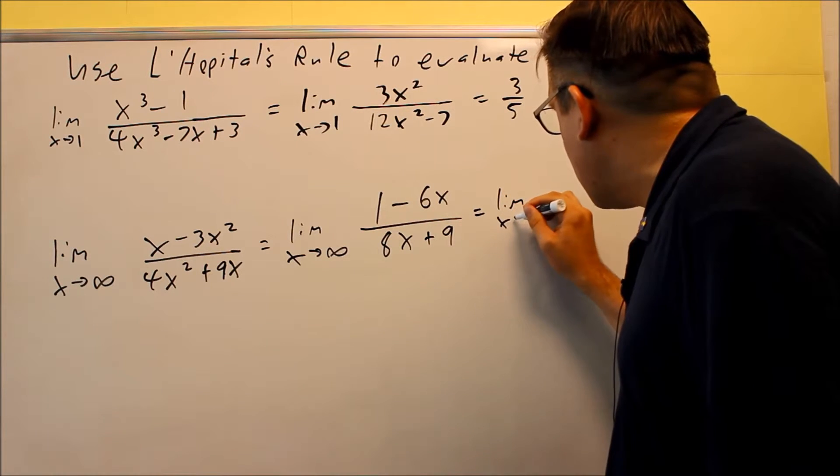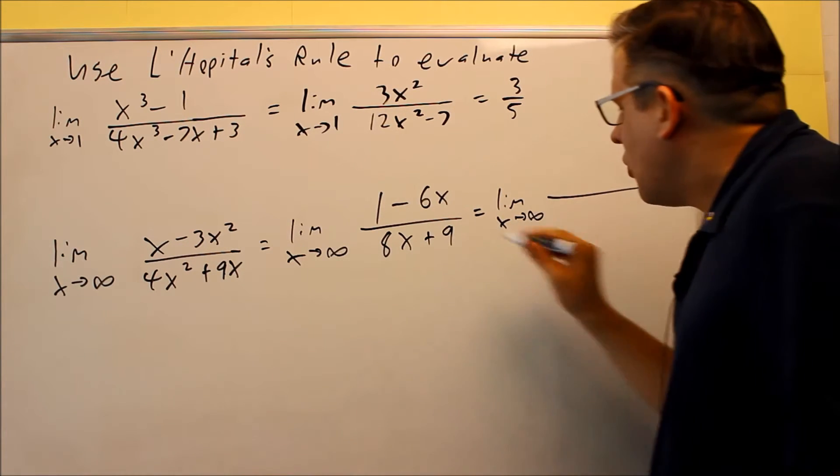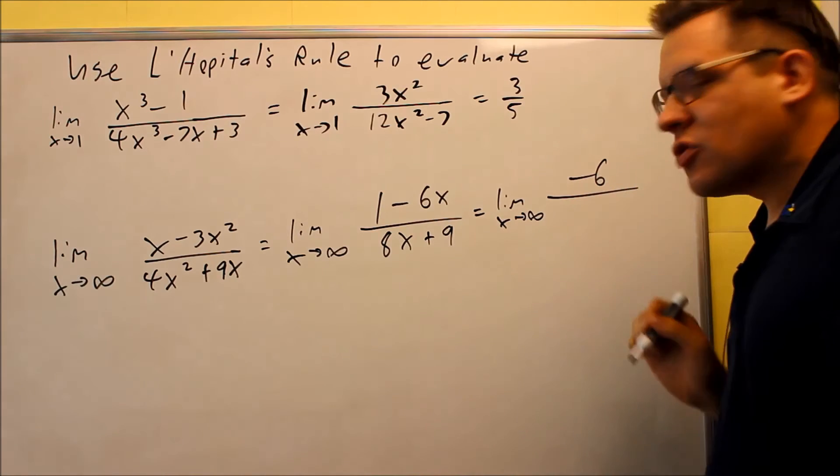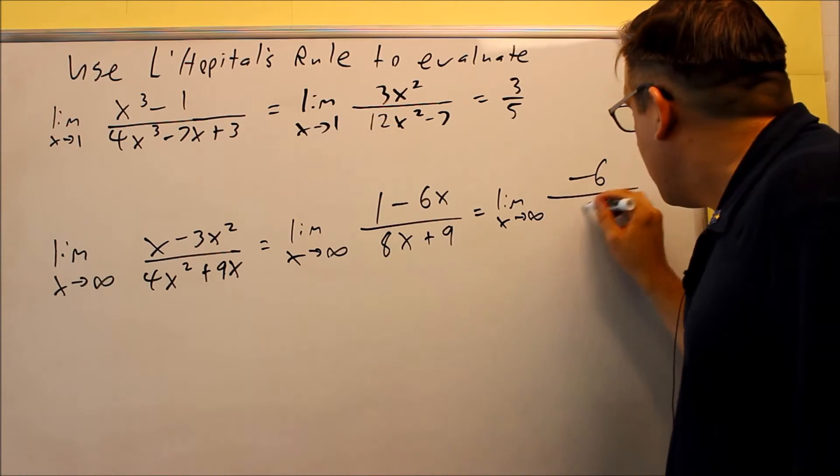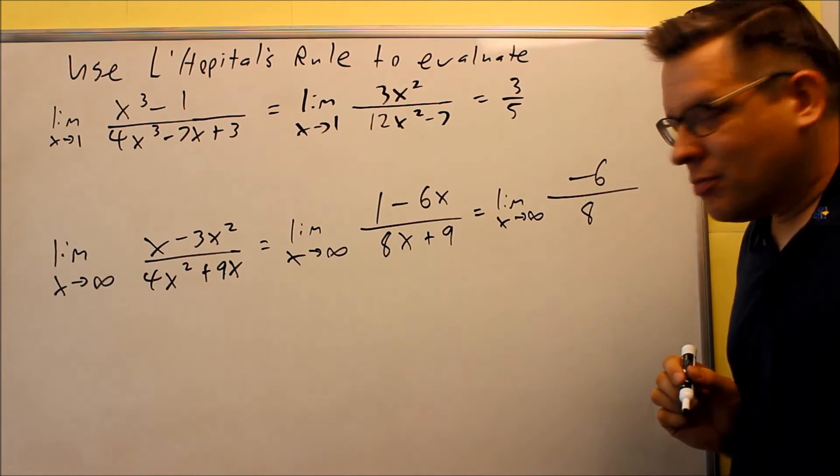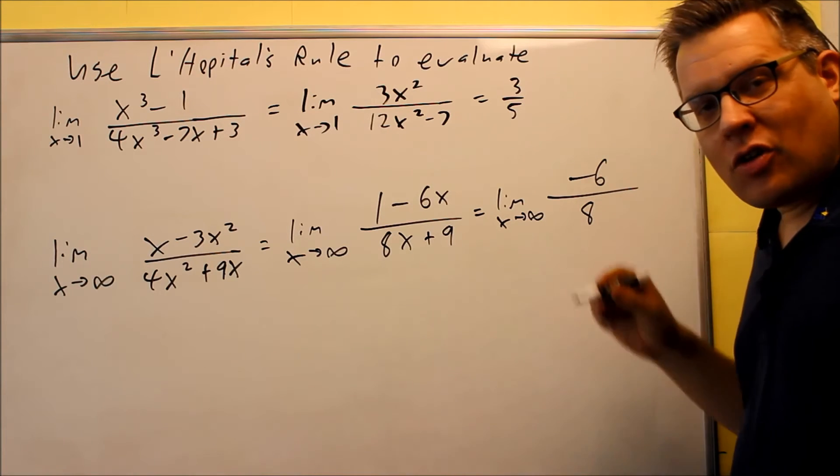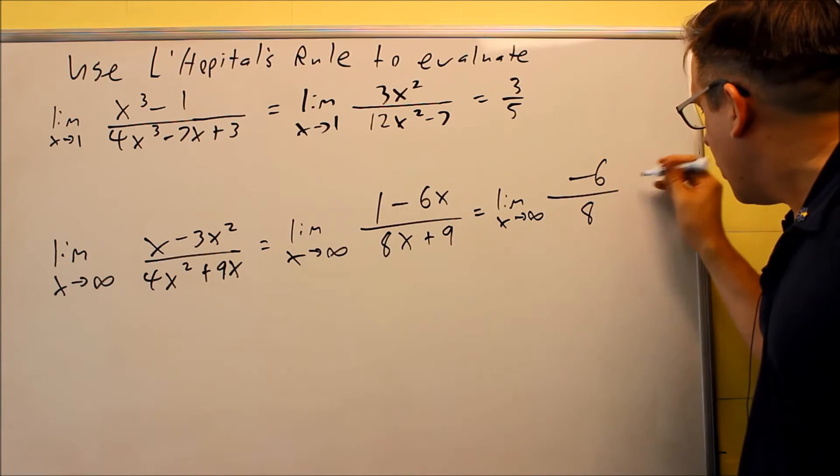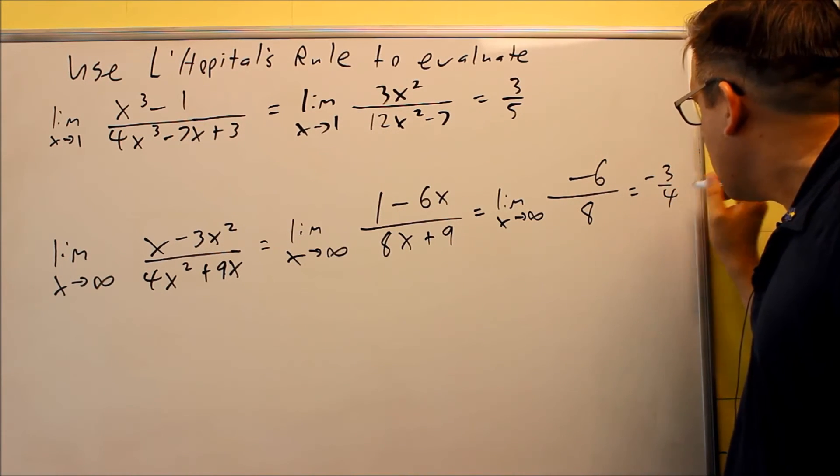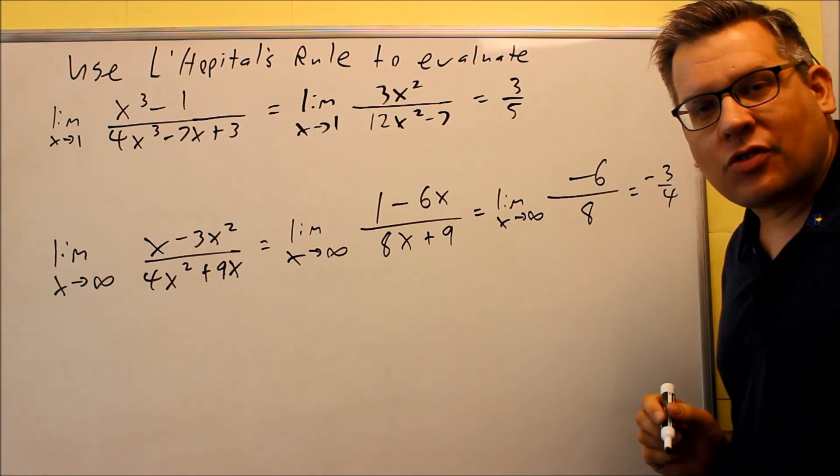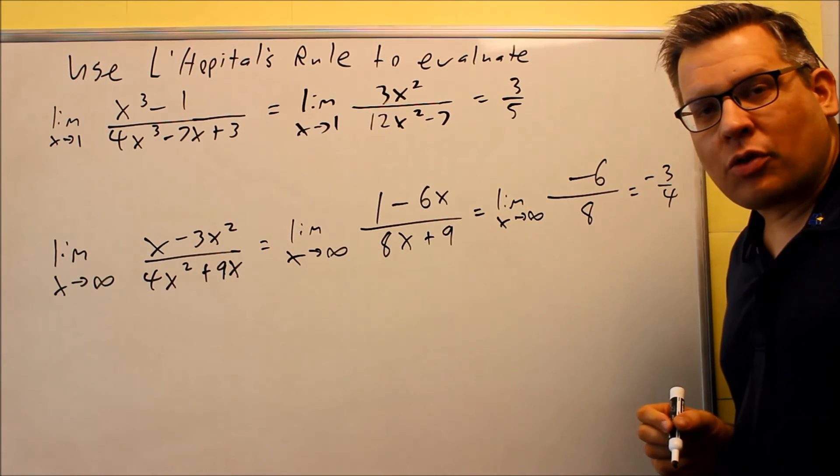So we're going to do one more time, limit as x goes to infinity. Do the derivative at the top, we're going to get negative 6, on the bottom you're going to get an 8. Well you're not going to get infinity over infinity anymore, we actually got a number. The only thing you have to do with that is reduce it, which means that your final answer for this one is going to be negative 3/4.